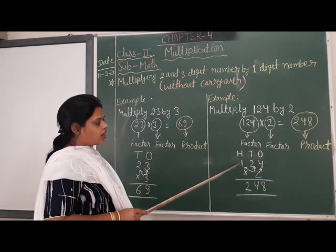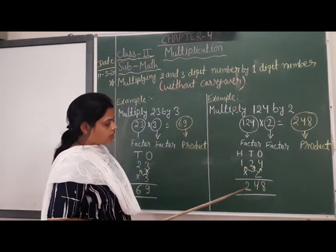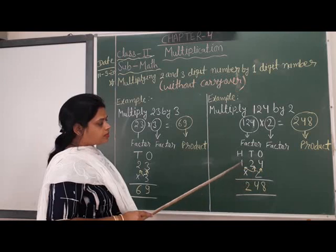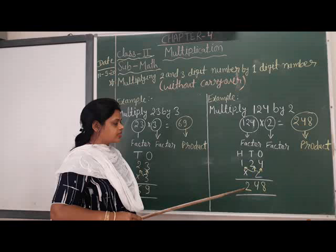After that, multiply 100s column by 2 and write the answer under 100s column.